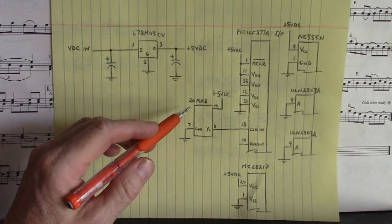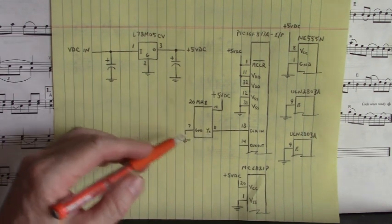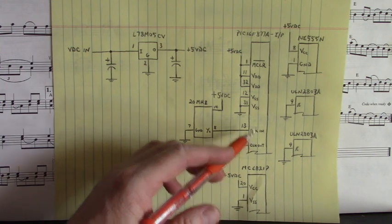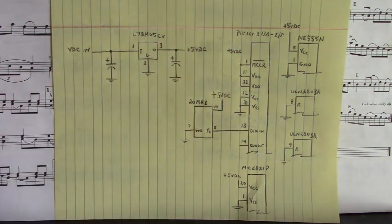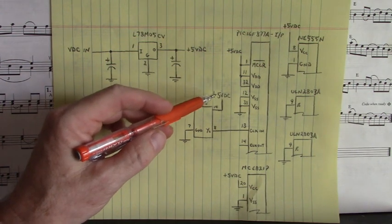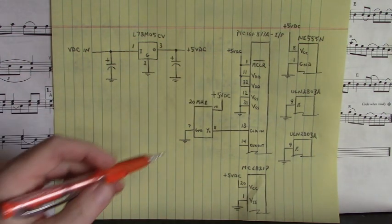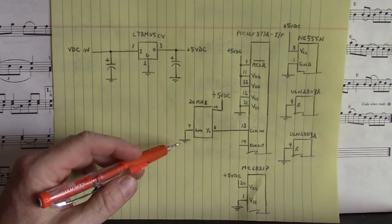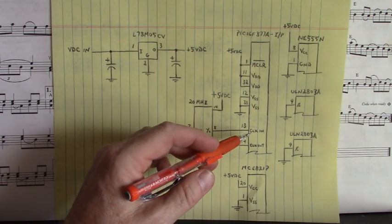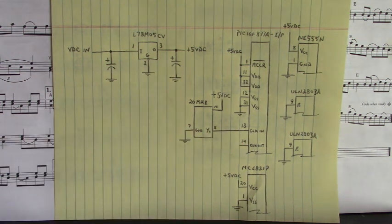Right here is the 20 megahertz clock for pin 13 clock in of the PIC16F877A. Pin 14 of the clock is plus 5 volts DC. Pin 7 of the clock is ground. And pin 8 is the clock output into pin 13 clock input.